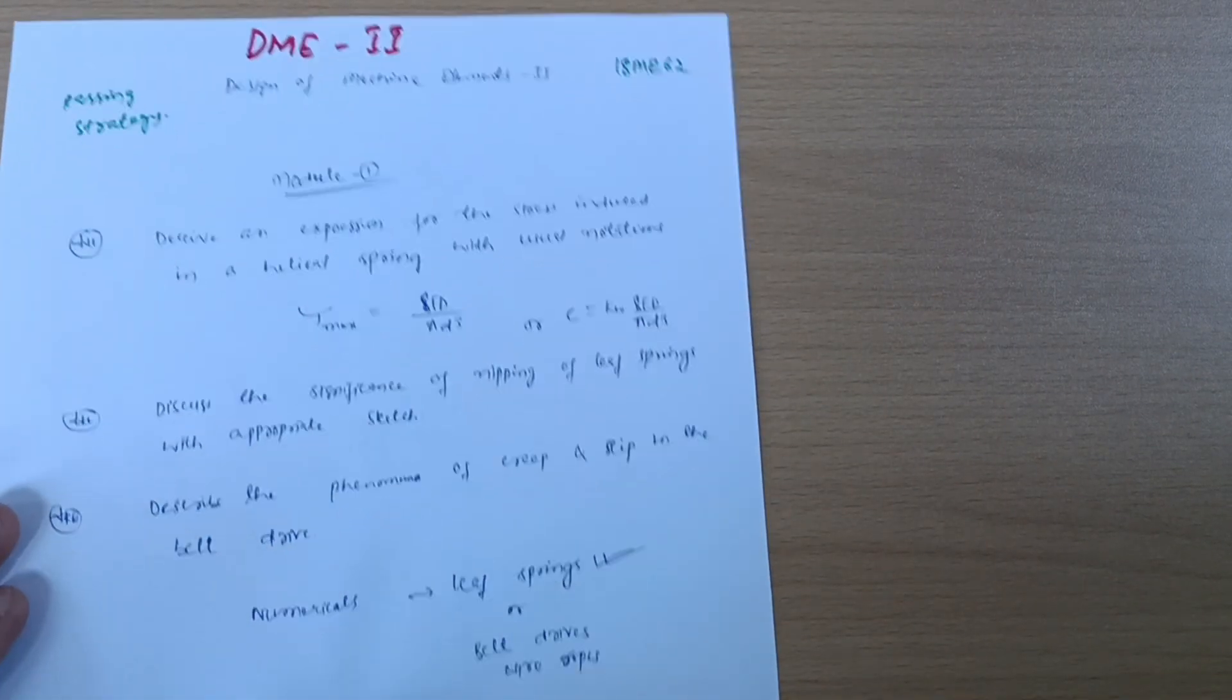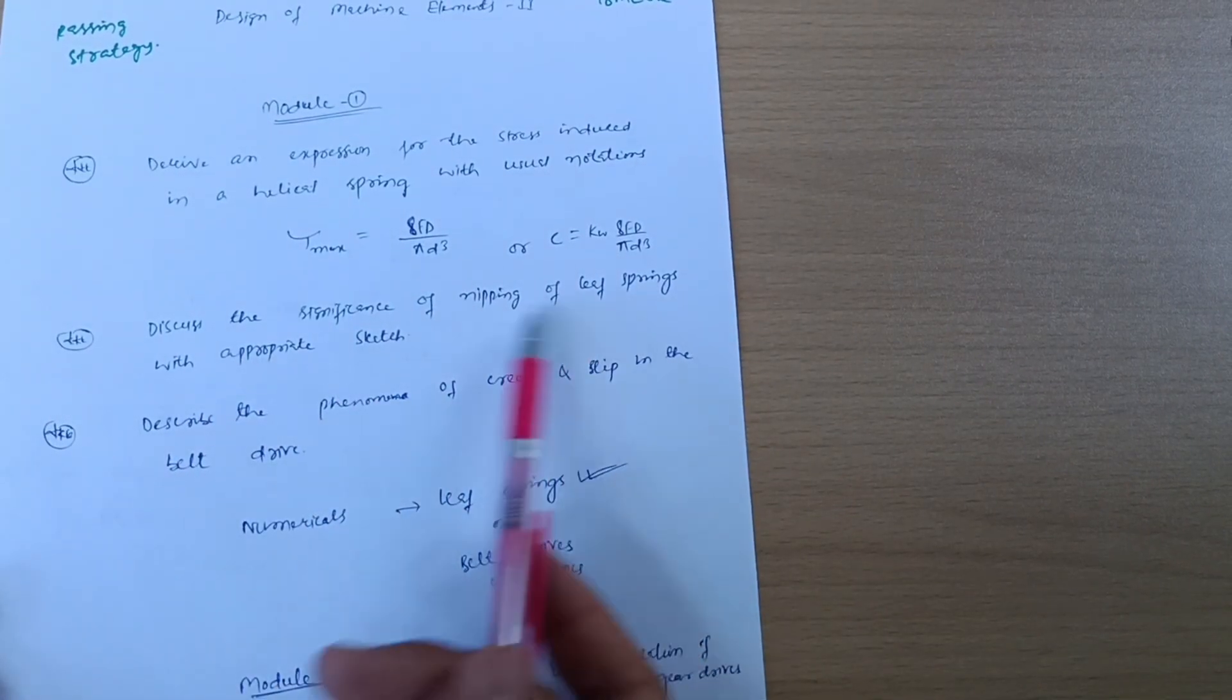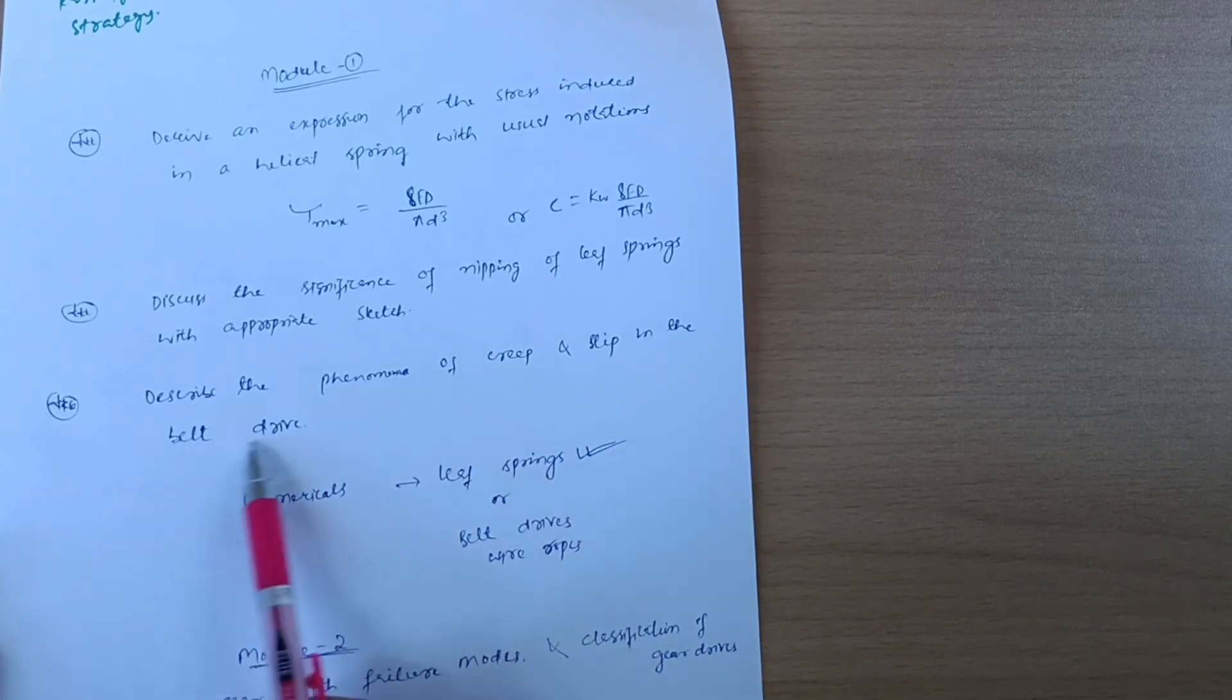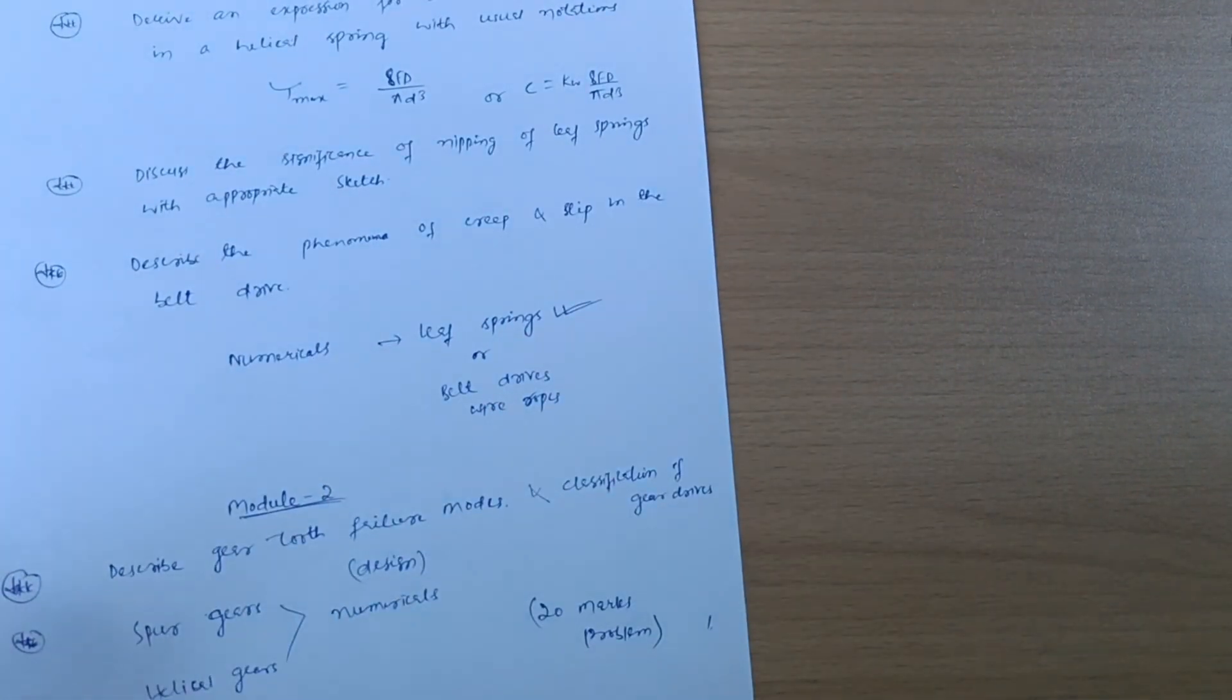Next part: discuss the significance of nipping of leaf springs with approximate sketch. Describe the phenomena of creep and slip in belt drives, and some numericals are there which may be 10-10 marks.